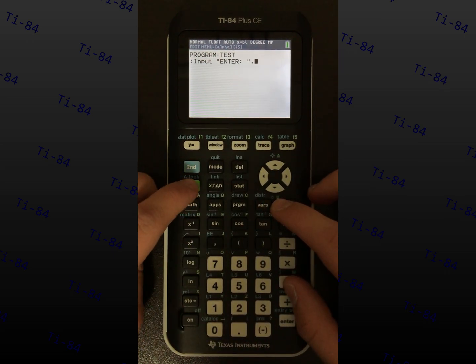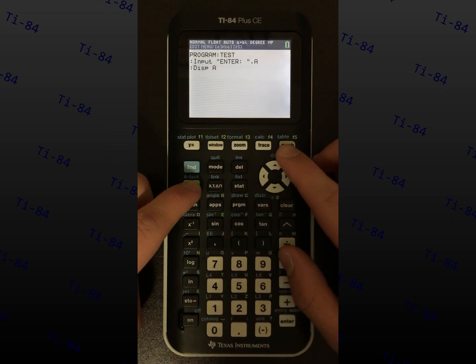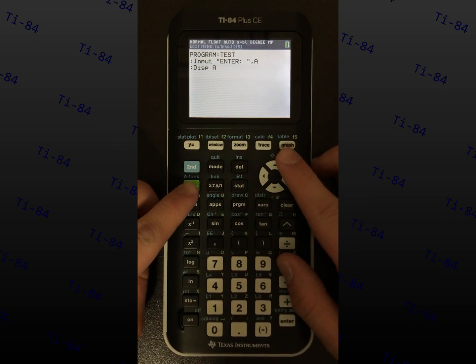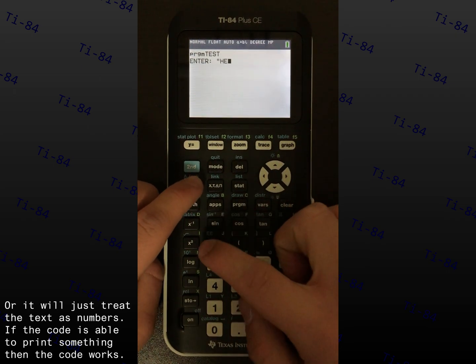Variables are letters A through Z and theta for a total of 27 variables. Insert display and put in your variable. Alpha F5 to run your program, and it should print whatever you have typed.